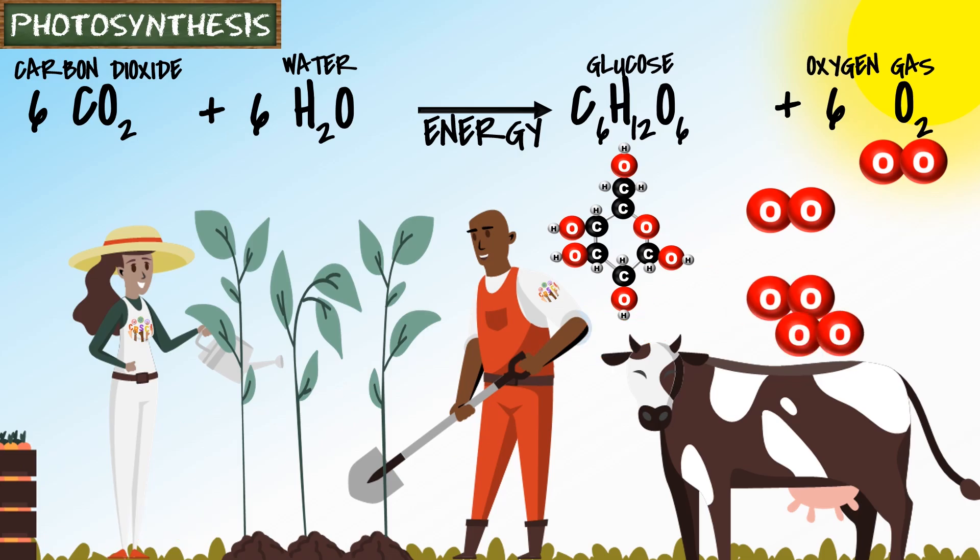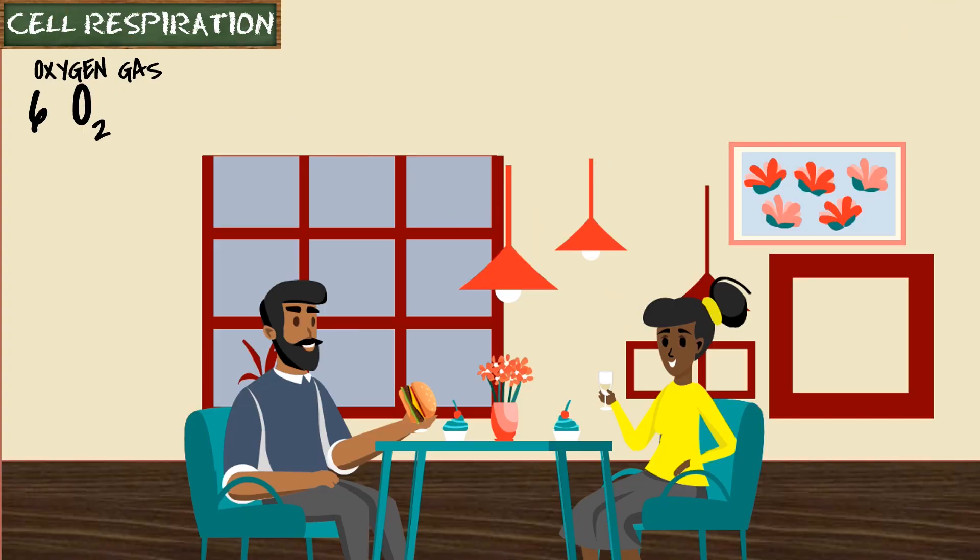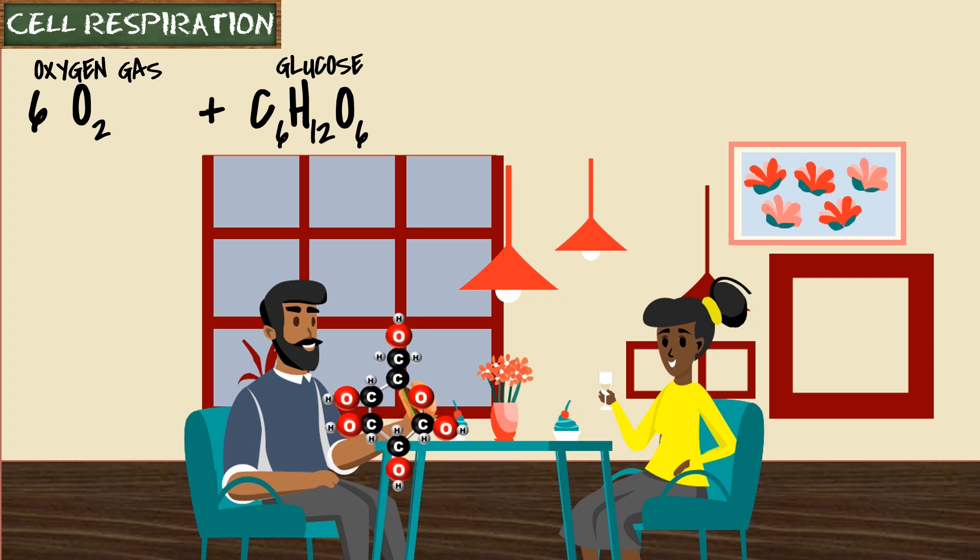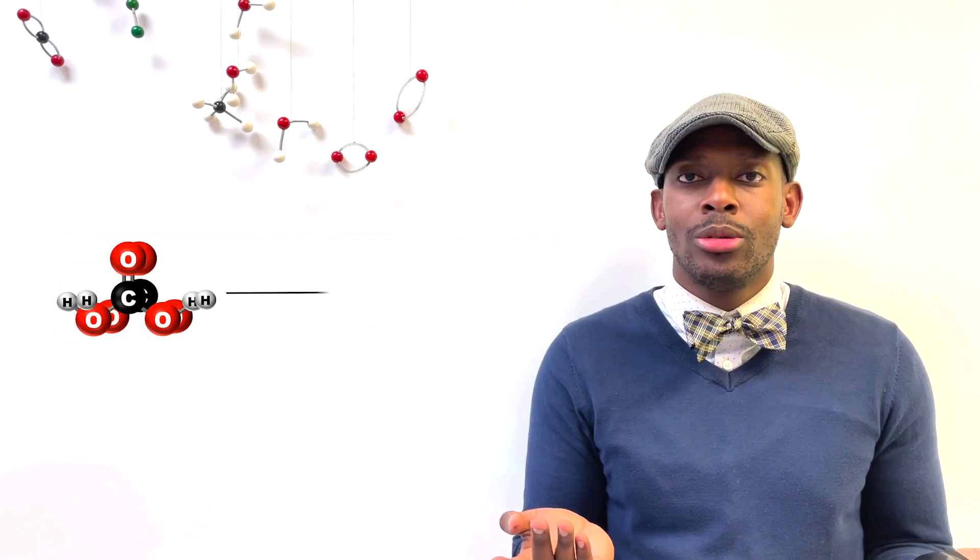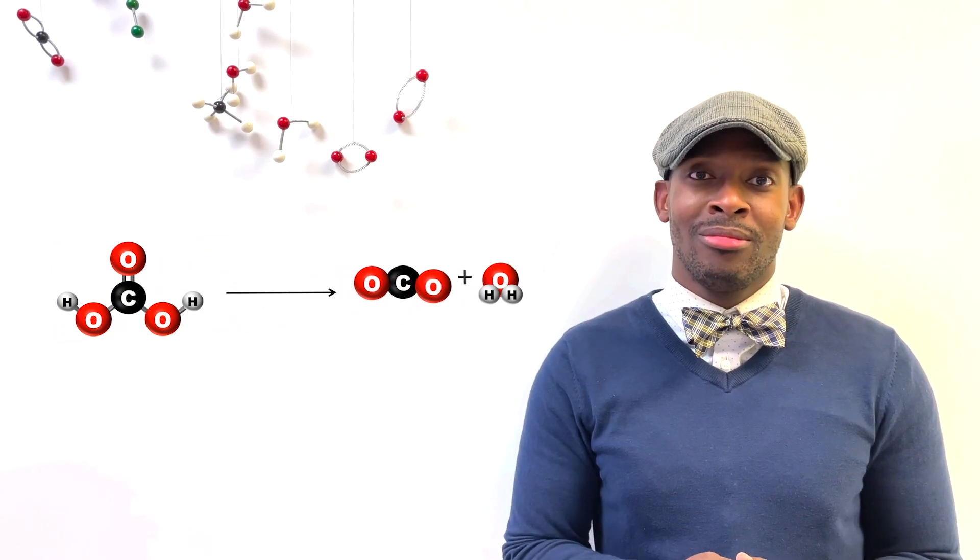Animals take in that oxygen and that glucose when we eat to produce carbon dioxide and ATP, the energy that's keeping us moving and talking and alive. This is nothing but taking in molecules and rearranging.